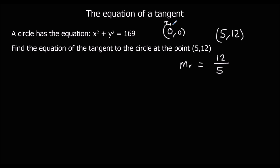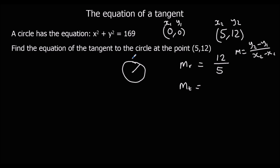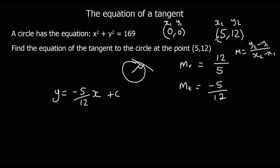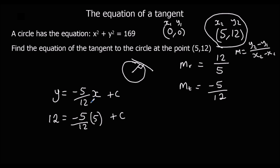Since the radius is perpendicular to the tangent, we flip and change the sign: the gradient of the tangent is -5/12. So y equals -5/12 x plus c. It passes through (5, 12), so substituting: 12 equals -5/12 times 5 plus c, which gives 12 equals -25/12 plus c.